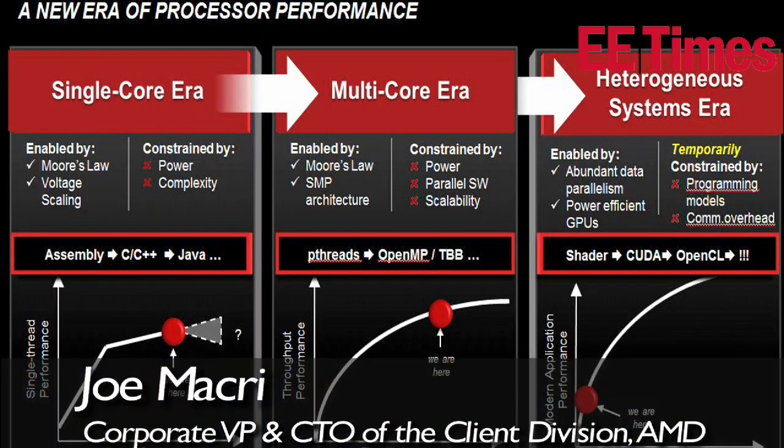A second attribute you immediately want is coherency. It's very important that the CPU and the GPU can work on the same data simultaneously, but they don't step on each other. We have a hardware coherency mechanism that allows these two to work together without destroying the benefits of parallelism, but allows both units to work simultaneously on one problem.